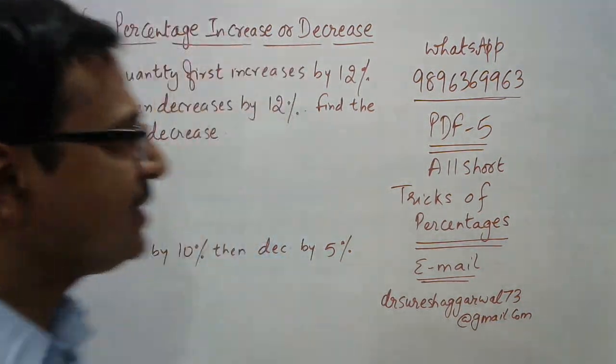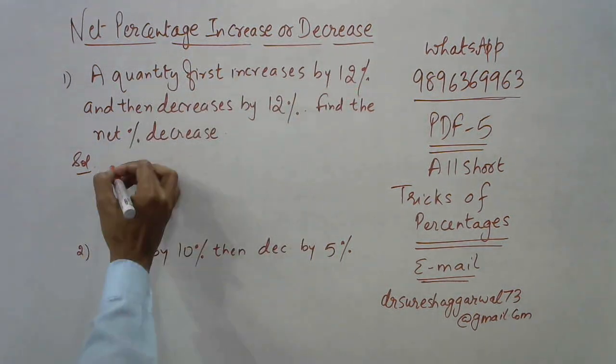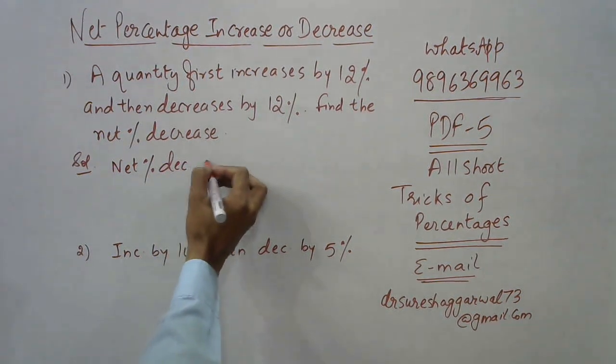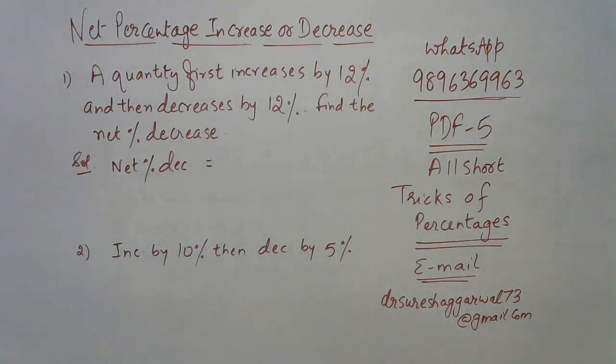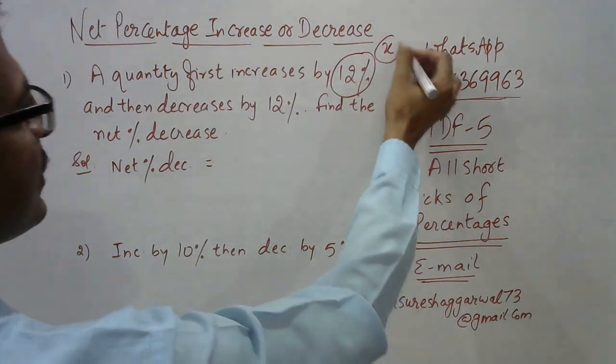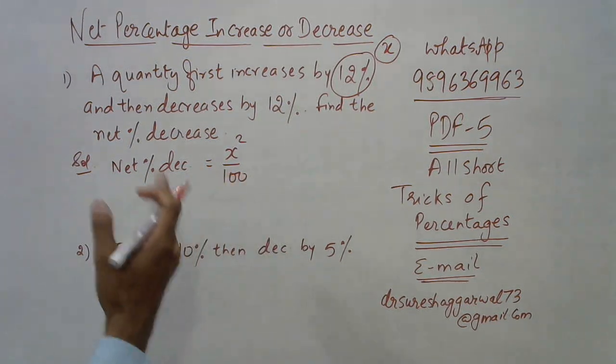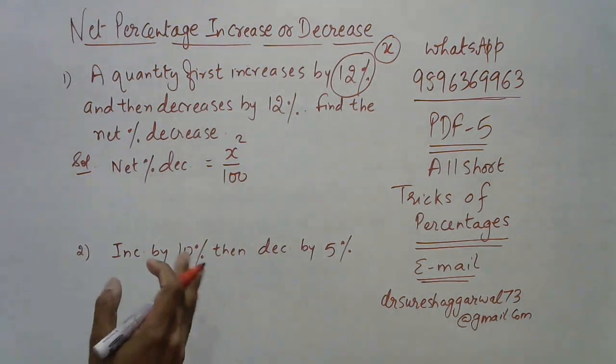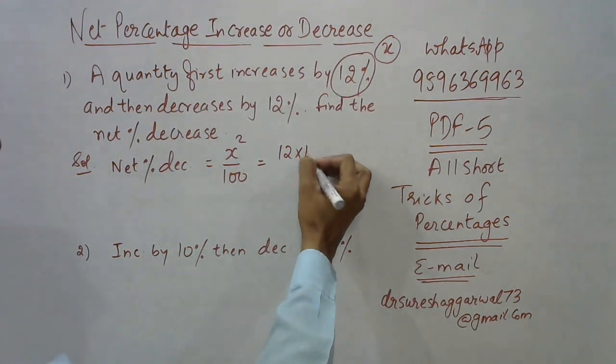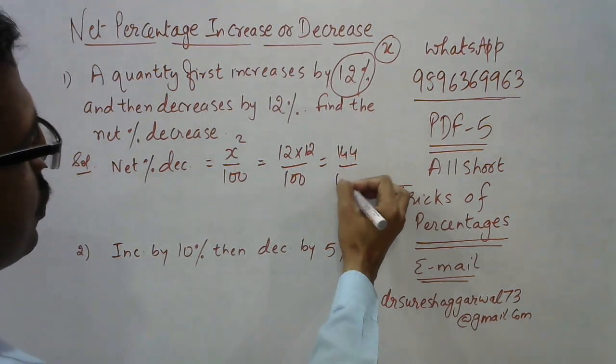Let me show you how. See this problem: quantity first increases by 12% and then decreases by 12%. The net percentage decrease in this case can be calculated directly. If you consider this percentage as x, the formula is x² ÷ 100%. So x is 12 here, so 12 × 12 ÷ 100, that will be 144 ÷ 100. Net percentage decrease will be 1.44%.